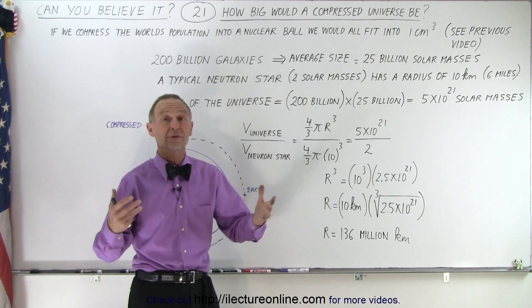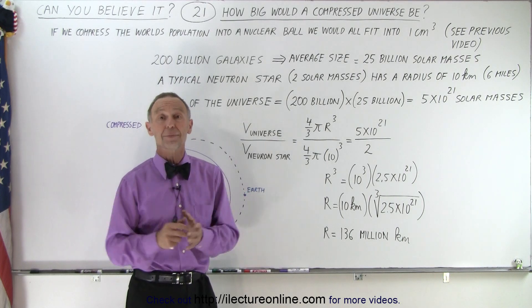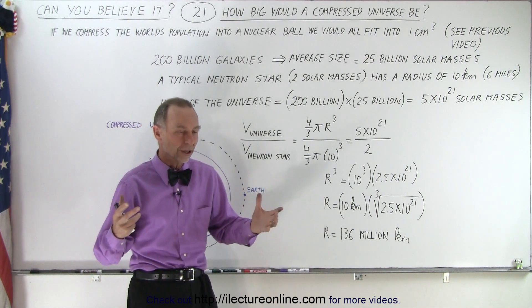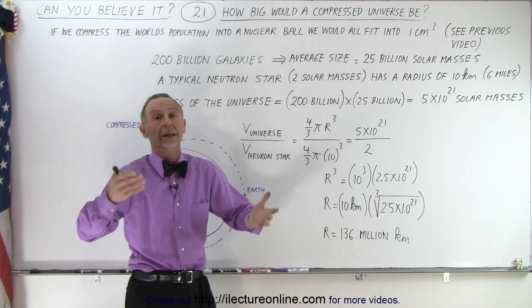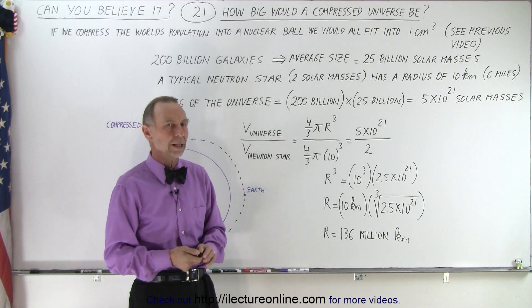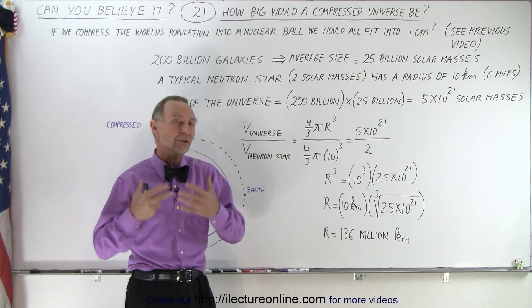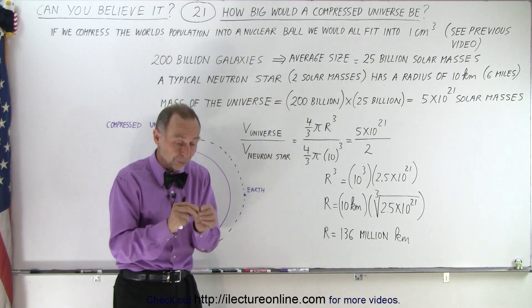Those neutron stars, typically about two times the mass of the Sun, have a radius of only about 10 kilometers. They're tiny compared to the size of the earth and minuscule compared to the Sun—completely compressed into a ball only about 20 kilometers across with a radius about 10 kilometers, which is only about 6 miles.